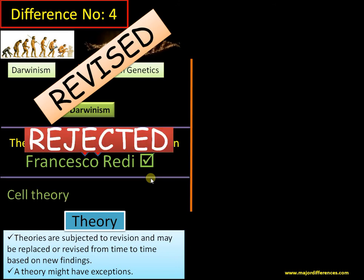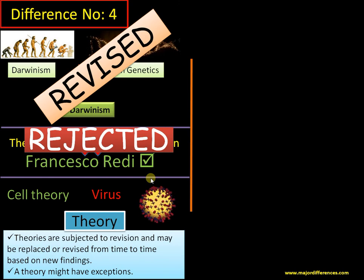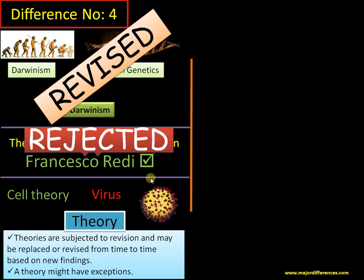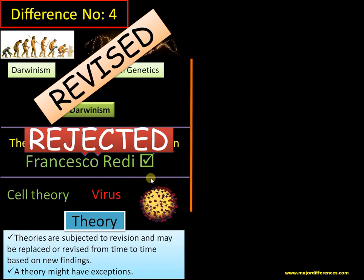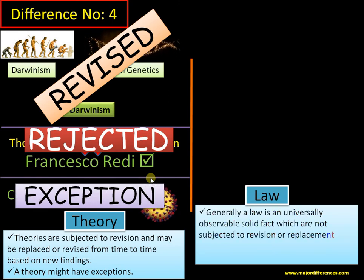According to cell theory, all organisms are made up of cells. However, take the example of a virus — it cannot be considered an organism; it is a sub-cellular particle that shows some characteristics of life. Cell theory cannot include viruses. So there are many exceptions, like viruses, viroids, and infectious protein materials like prions. A theory can have exceptions; it may not be universal.